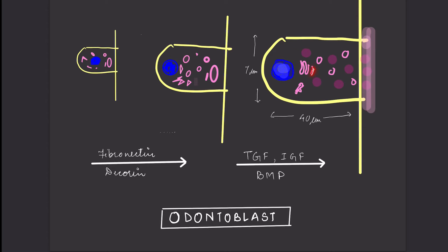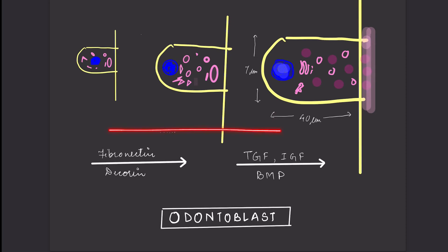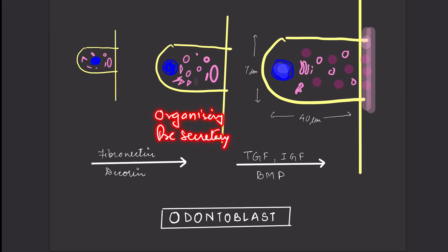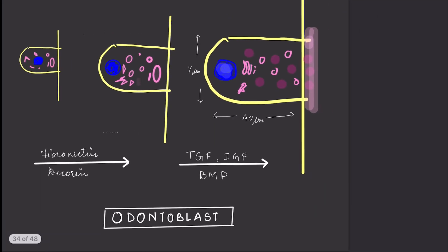Within the odontoblast cell, changes include the appearance of proline in the Golgi complex and formation of matrix vesicles. These matrix vesicles deposit at the basal junction, attract calcium salts, and allow the matrix to mineralize. This represents the organizing or pre-secretory stage transitioning to the differentiated or secretory stage of the odontoblast.